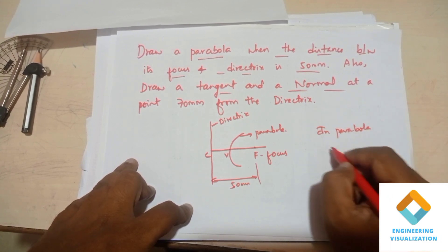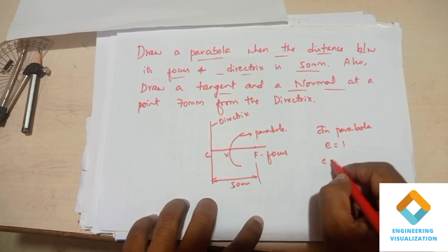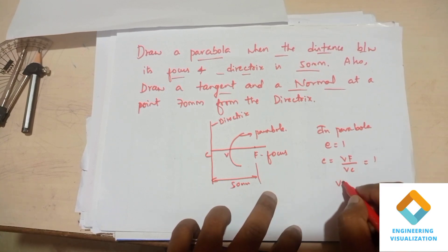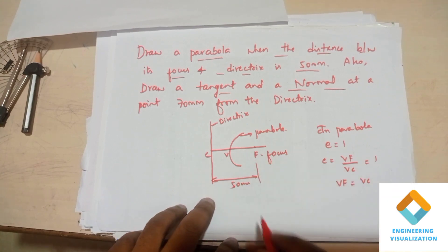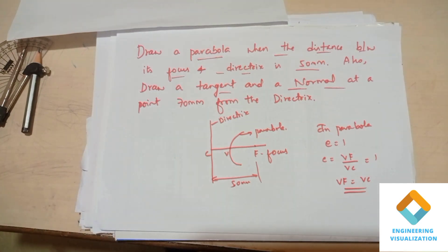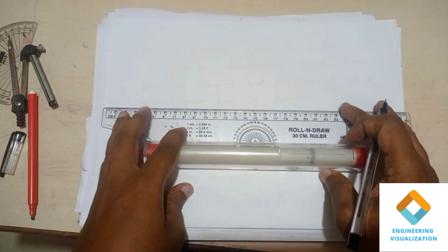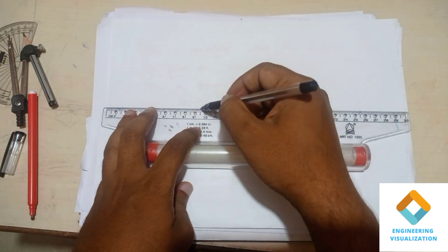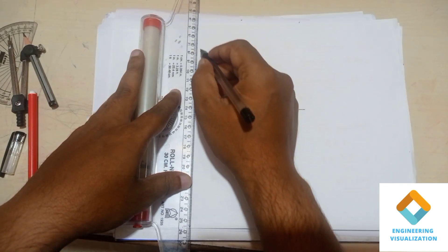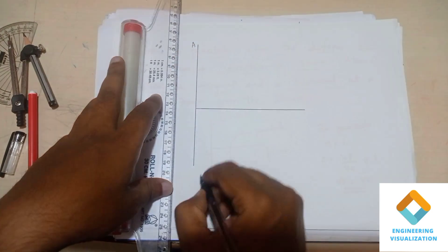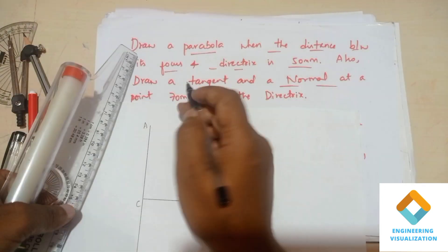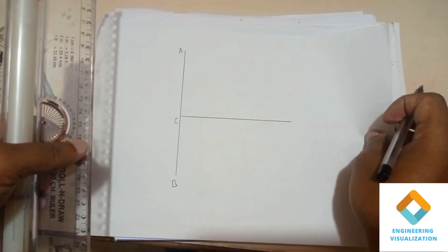In a parabola, eccentricity e equals 1. So VF divided by VC equals 1, meaning VF exactly equals VC. Both VF and VC will have the same length, that is 25 mm each, since the total distance is 50 mm. First draw one horizontal line of any length, and perpendicular to it draw the directrix AB. This is the C point.